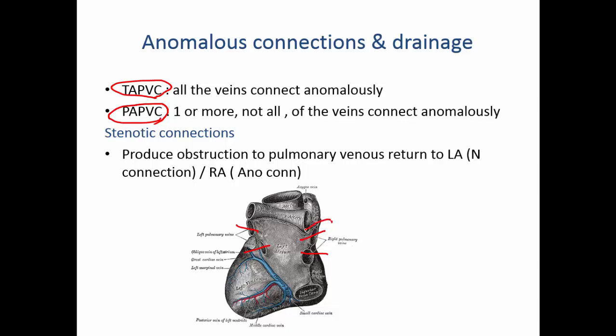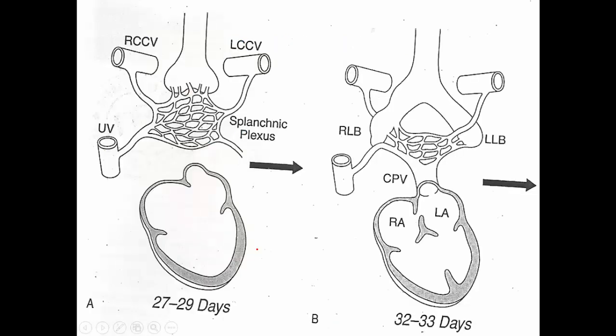The third abnormality that can go wrong with pulmonary venous connection is stenosis — for example if the pulmonary vein is coming and joining here but the entry is stenosed. That's pulmonary vein stenosis. Cor triatriatum is part of those stenotic connections.